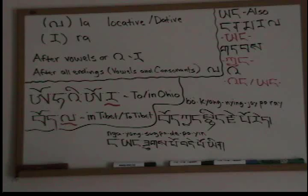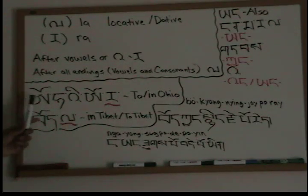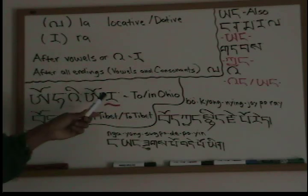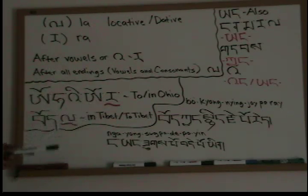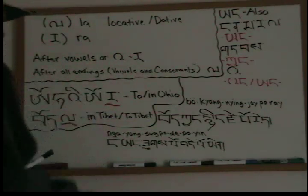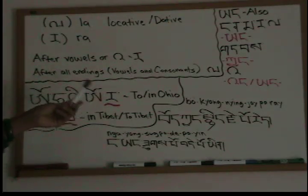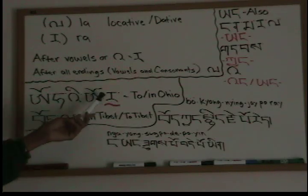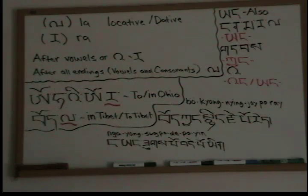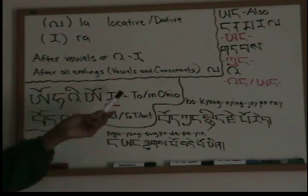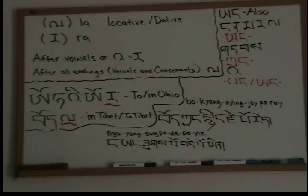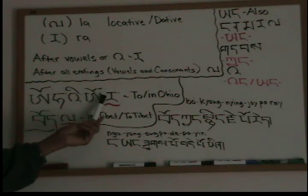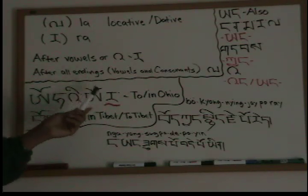I made a few examples here. So, 'Ohio' with ra becomes 'Ohio-ra' — when you use the ra, you just connect it on the end of the vowel. After the vowel, you just add the ra. That would mean 'to' or 'in Ohio.' You don't need the separator dot for ra.